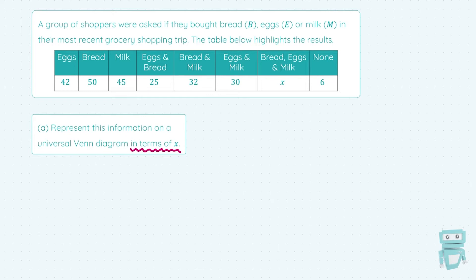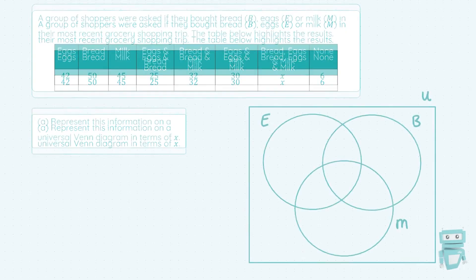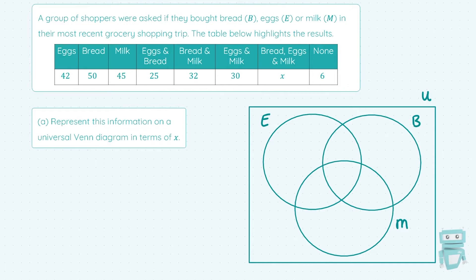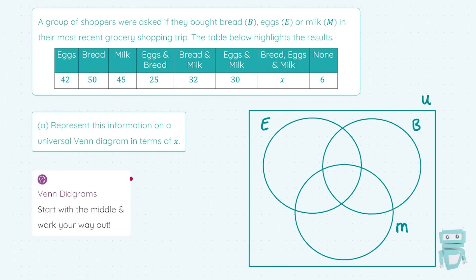On this Venn diagram we can expect to see lots of X's. I'm drawing three sets — one for eggs, one for bread, one for milk — with a box around them for the universal set. The golden rule for filling in a Venn diagram is to start with the middle and work your way out. So the first place I fill in is the three-way intersection: eggs intersect bread intersect milk. X people bought all three, so X goes in there straight away.